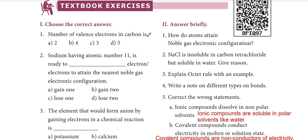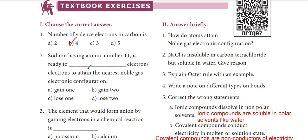First section: choose the correct answer. First question: the number of valence electrons in carbon. The valence electron of carbon — the outermost shell level electron — is 4.